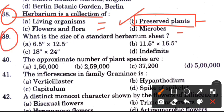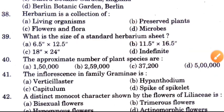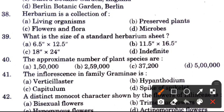Question 39: What is the size of a standard herbarium sheet? Options are 6.5 × 12.5, 11.5 × 16.5, or 18 × 24 indefinite. The answer is B, 11.5 × 16.5. This is very important.